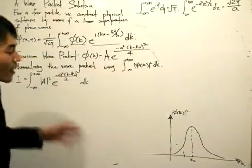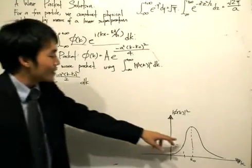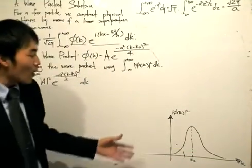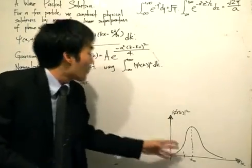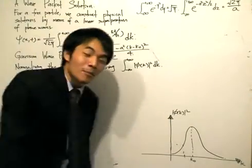Now, your immediate conclusion might be to think that this Gaussian wave packet is representing the particle. Because after all, it looks like a nice probability density function. We can see that it's normalized, and if we normalize it, maybe we can use it to represent the particle.